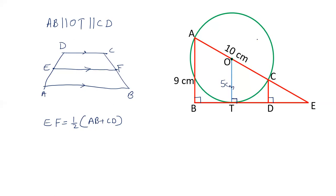Now using the same property here, let's see what we can get in this particular question. Here in this case, we have AB, we have OT, and also we have CD.